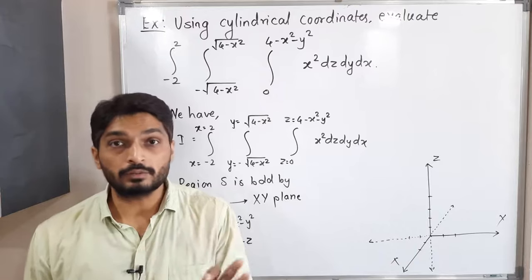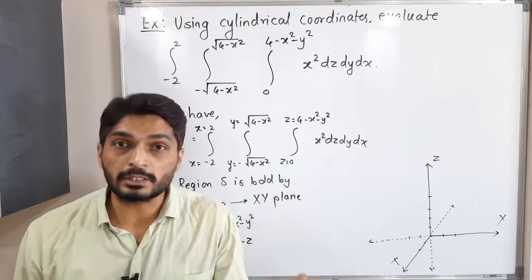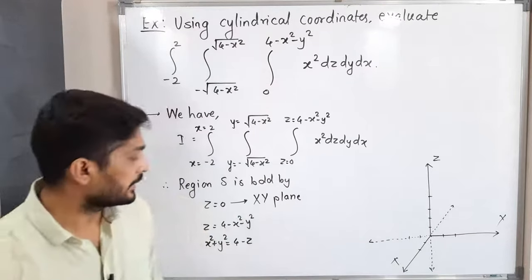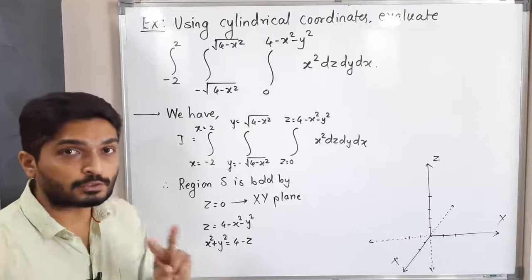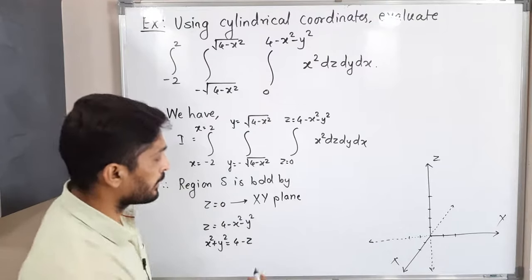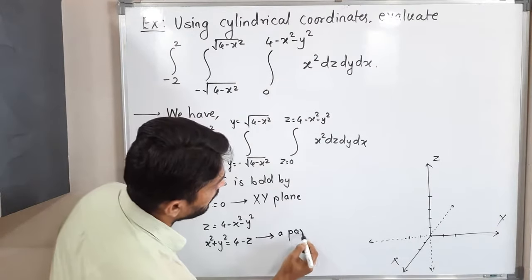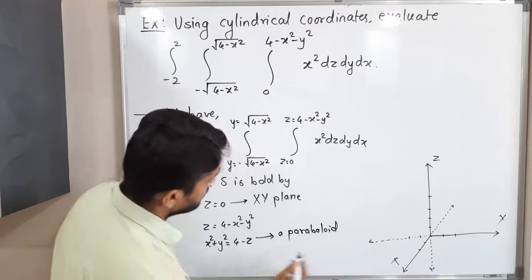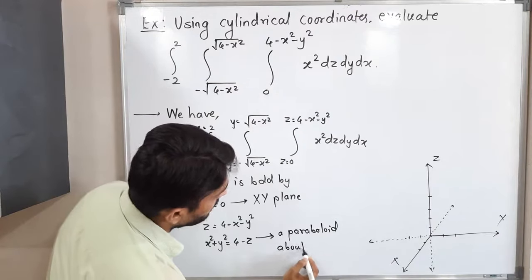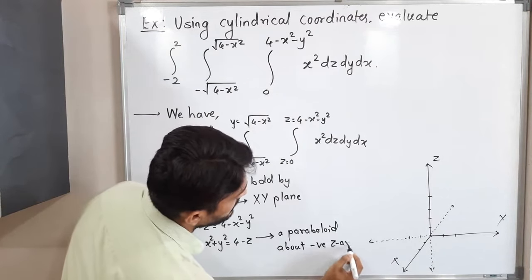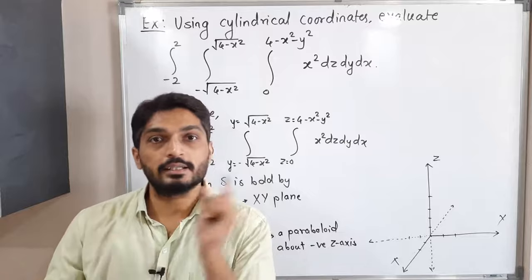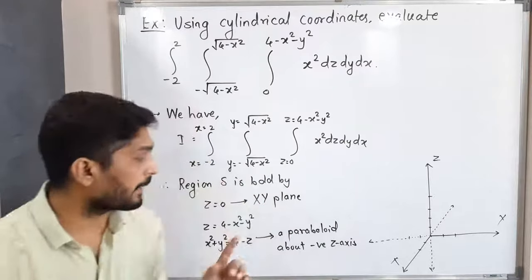When two variables have power 2 and one variable has power 1, this is the equation of a paraboloid. Here, x² and y² have power 2 and z has power 1, so this is a paraboloid. Since z has a negative sign, it opens about the negative z-axis — meaning it opens downward.